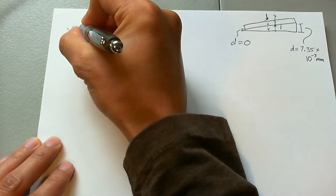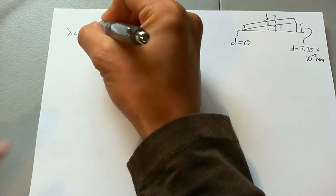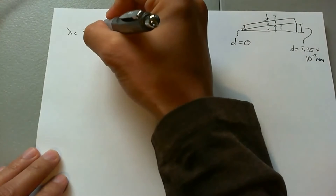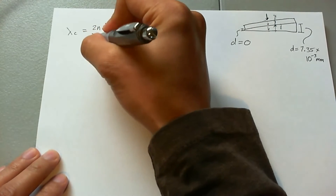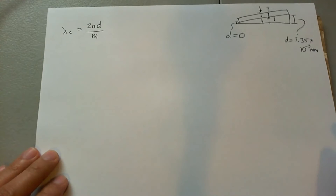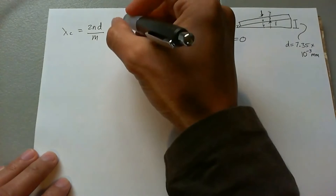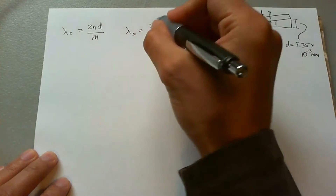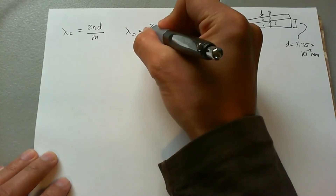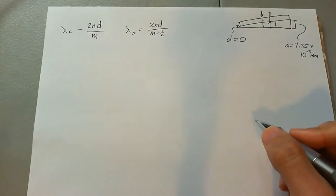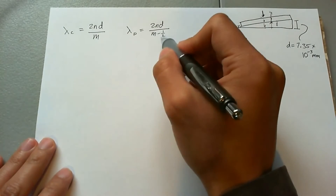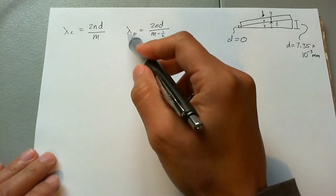That means we can use these equations. The wavelength for constructive interference is: lambda_c = 2 times the index of refraction of the medium the wave travels through, times its distance, divided by m — whichever mode of interference we're talking about. And lambda_d = 2 times n times the length divided by (m minus one-half). That mode minus one-half means the wavelength is offset by half, which gives destructive interference.